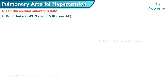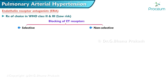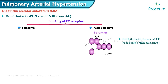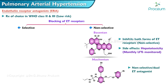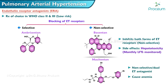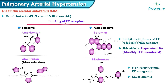Endothelin receptor antagonists are the treatment of choice in WHO class 2 and 3 low-risk patients of pulmonary arterial hypertension. Blockade of endothelin receptors may be selective or non-selective. Bosentan inhibits both forms of endothelin receptors non-selectively and is associated with hepatotoxicity, requiring monthly liver function monitoring. Macitentan is also a non-selective dual endothelin antagonist known to cause anemia. Ambrisentan and sitaxsentan are selective endothelin A antagonists.